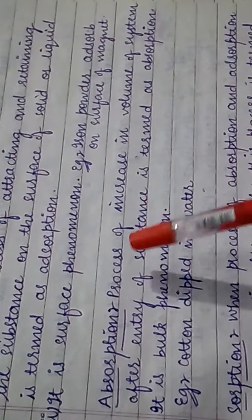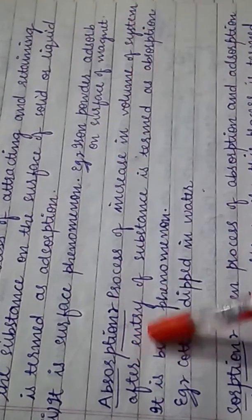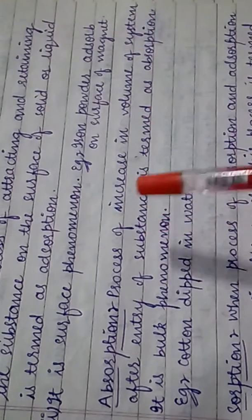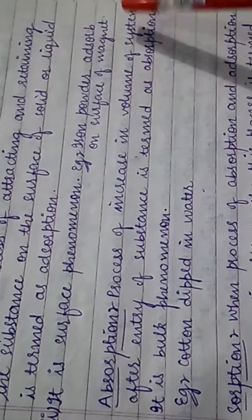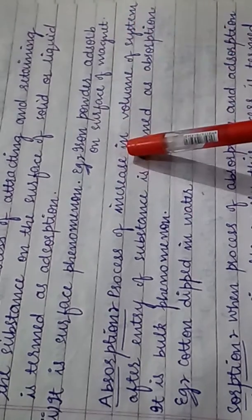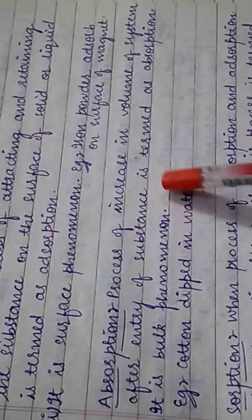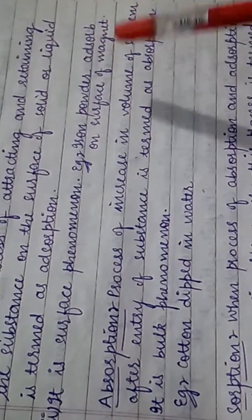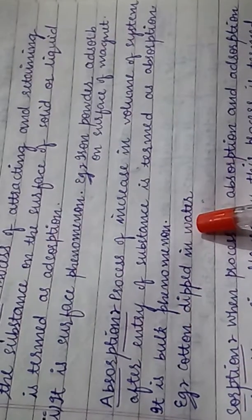Now we come to absorption. The process of increase in volume of a system after the entry of a substance is termed as absorption. If we look at any substance after entry and our overall system's volume increases, then it is called absorption, and it is a bulk phenomenon — because our overall system's volume increases. For example, cotton dipped in water.